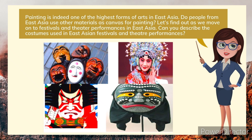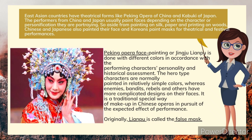Painting is one of the highest forms of arts in East Asia. As we move on to festivals and theater performances in East Asia: East Asian countries have theatrical forms like Peking Opera of China and Kabuki of Japan. The performers from China and Japan usually paint their faces depending on the character they are portraying. So aside from painting on silk, paper, and printing on wood, Chinese and Japanese also paint their faces, and Koreans paint masks for theatrical and festival performances. Peking Opera face painting, or Jingju Lianpu, is done with different colors in accordance with the performing character's personality and historical assessment.